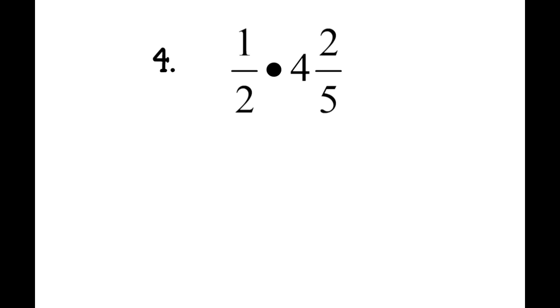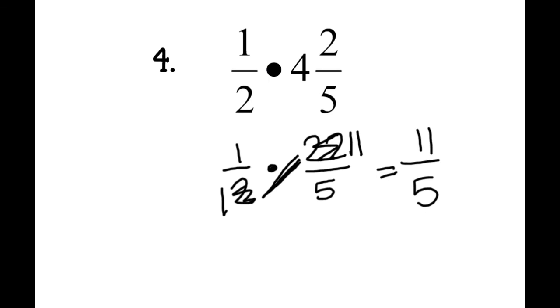Number 4: I'm going to make all my mixed numbers improper. It makes it so much easier. I have 1 half times 4 and 2 fifths, so I'm going to change that to 1 half times—4 times 5 is 20 plus 2 is 22 fifths. Then I cross-reduce. 2 goes into 22 eleven times. 1 times 11 is 11, 1 times 5 is 5. I can circle that. That cannot be reduced any further. I can make it a mixed number: 5 goes into 11 two times, which is 10, with 1 left over, so it becomes 2 and 1 fifth.